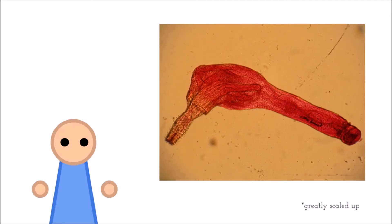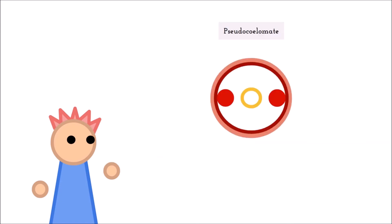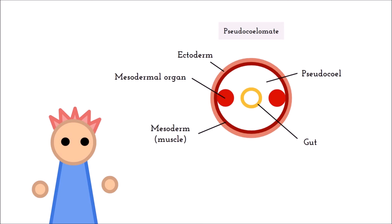Acanthocephala, the exclusively parasitic spine heads. Like the nemertea, they too have a proboscis, which is a spiny head used to embed themselves into their host, usually fish and birds. But unlike nemertea, they have a pseudocoelomate body cavity. This type of cavity is fluid-filled between the endoderm and mesoderm, meaning the cavity is not derived from the mesoderm. Other than that, they have the same key transitions with nemertea.